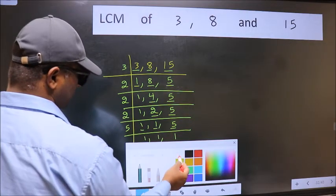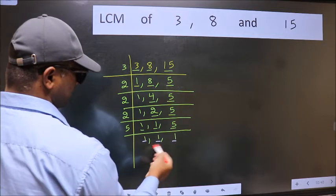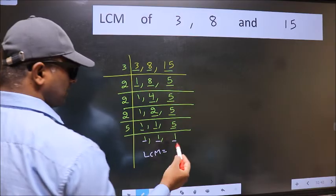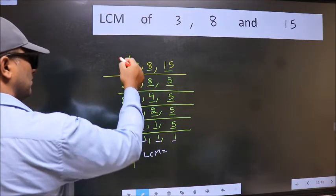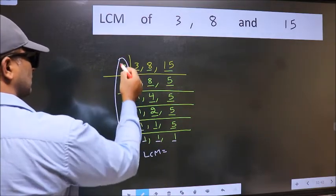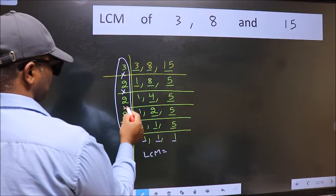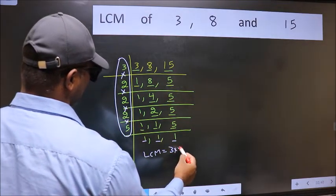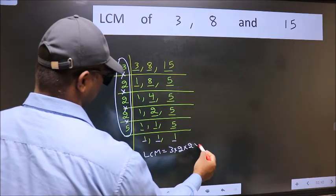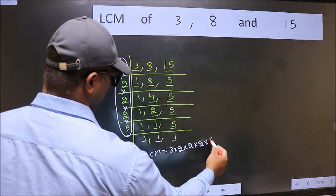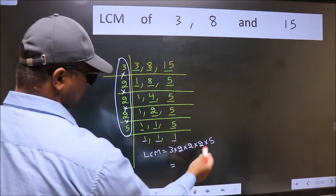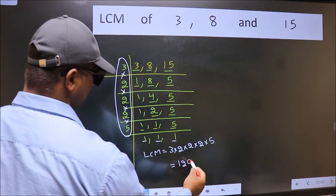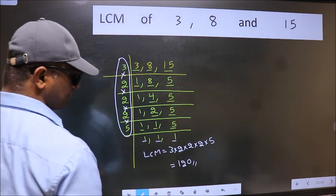So we got 1 in all 3 places. So our LCM is the product of these numbers — that is 3 into 2 into 2 into 2 into 5. When we multiply these numbers, we get 120. So 120 is our LCM.